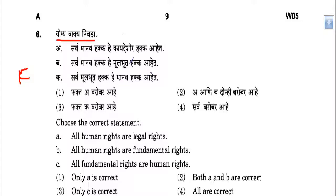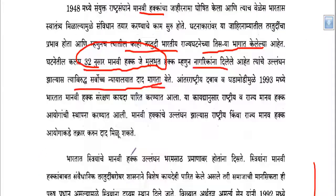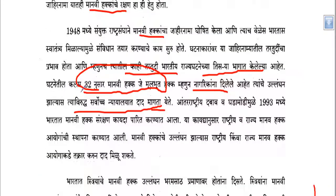Sarvohanohak he kailashir hak ahe. Sarvohanohak he mulabhoot hak ahe. Sarvohanohak he mulabhoot hak ahe — sarvohanohak he musake ahe. Two options: it directly says sarvohanohak harka he manohak ahan 1995. If you have a question, you can confirm it.